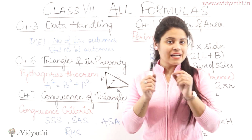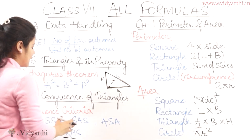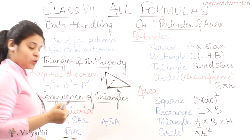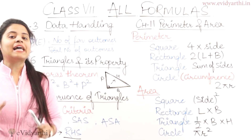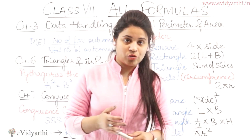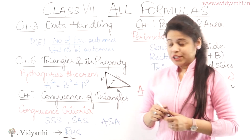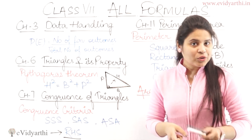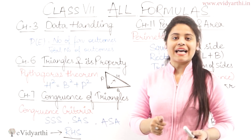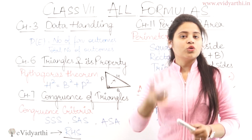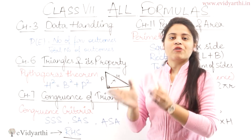Then the last one is RHS — right angle, hypotenuse, and side. This is only applicable to right-angle triangles. If you have two right-angle triangles where R is 90 degrees, both hypotenuses are equal, and one side (remaining base or perpendicular) is equal — those three things together mean the two right-angle triangles are congruent by RHS.